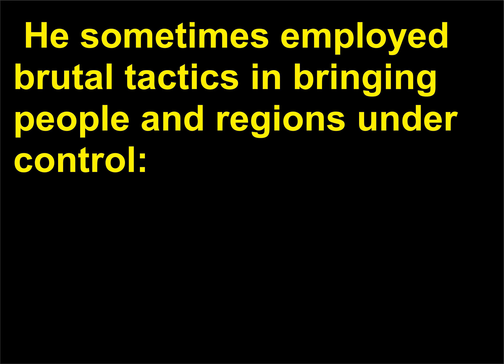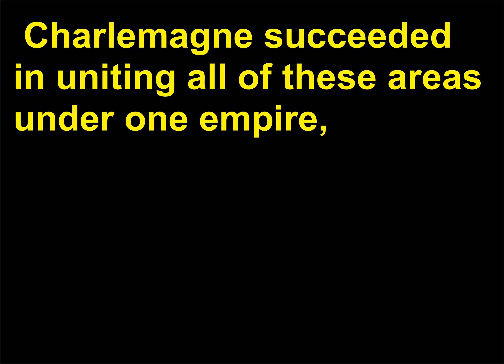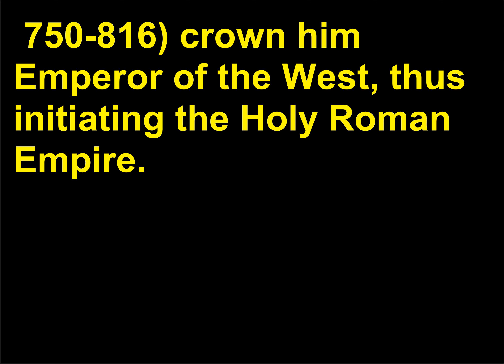He then went on to conquer much of Western Europe, including Saxony, Lombardy, northeastern Spain, and Bavaria. He sometimes employed brutal tactics in bringing people and regions under control — during the last two decades of the 8th century he used mass executions to subdue Saxon rebellions. Charlemagne succeeded in uniting all of these areas under one empire, and on Christmas Day 800, he had Pope Leo III, c. 750–816, crown him Emperor of the West, thus initiating the Holy Roman Empire.